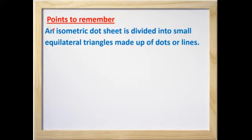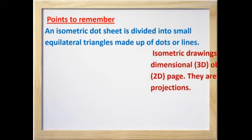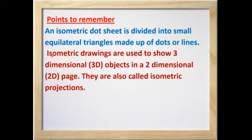Some points to remember. An isometric dot sheet is divided into small equilateral triangles made up of dots or lines. Isometric drawings are used to show three-dimensional 3D objects in a two-dimensional 2D page. They are also called isometric projections.